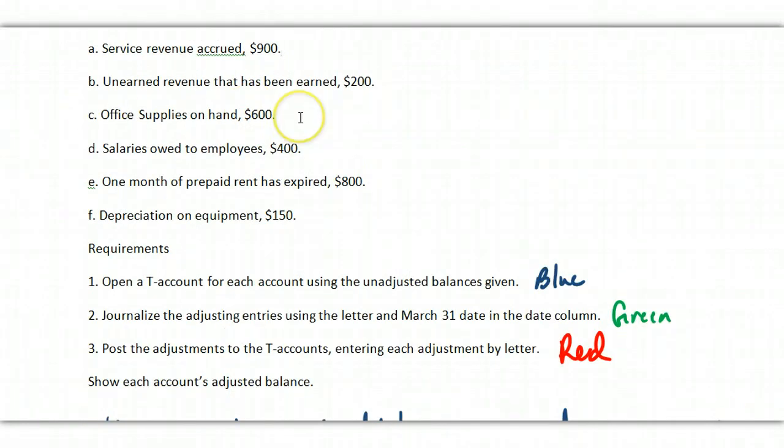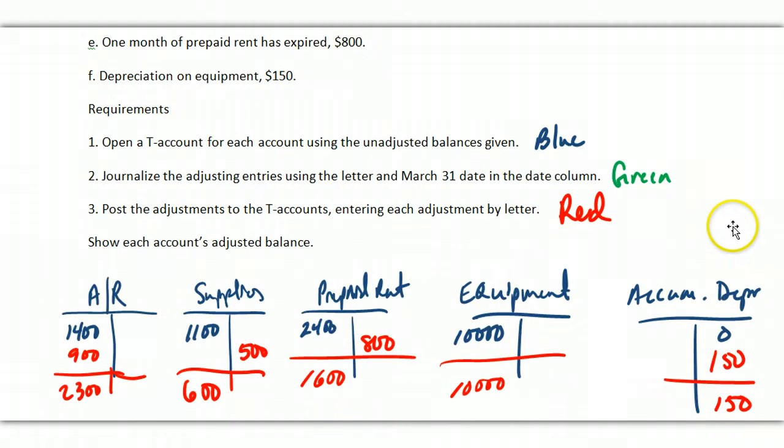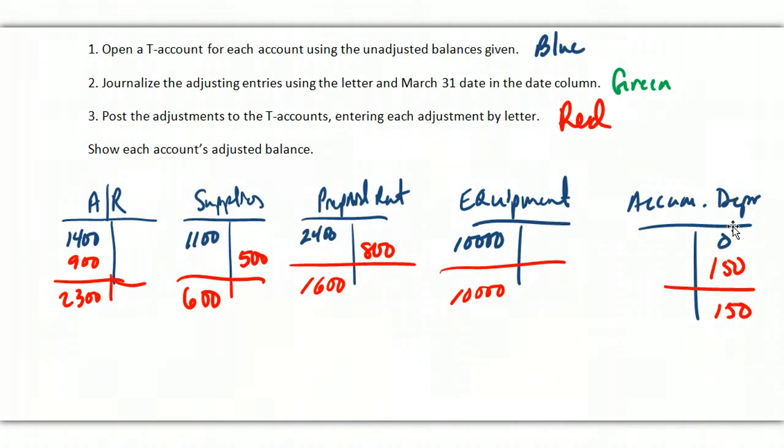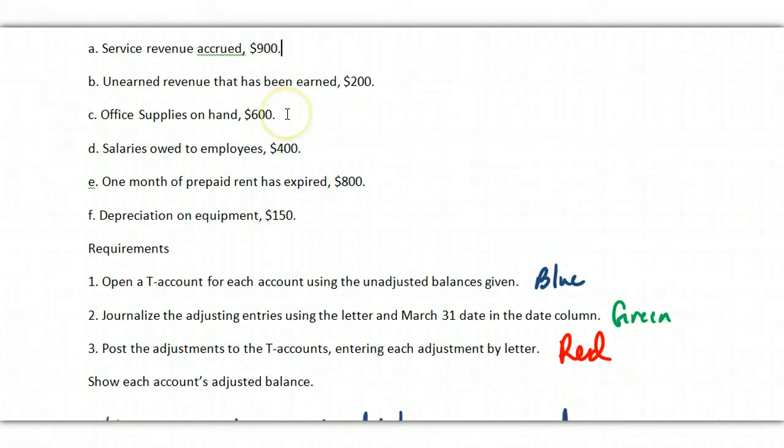Office supplies on hand, $600. All right, this might be a tricky one for some of you. Some of you may have struggled with this in the homework. So I had $1,100 on hand. That's what my unadjusted balance shows. It tells me now that I've gone and taken account that I actually have $600.